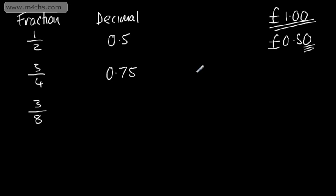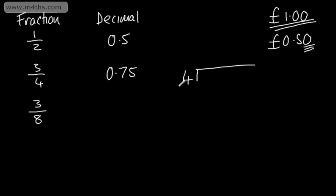Let's say we didn't take that approach — and certainly for some harder examples we wouldn't. What I'm going to do to find the decimal equivalent of a fraction is to use short division. Using what you might have known as the bus stop method, we have the denominator, which is the bottom number, 4, on the outside, and the numerator, or the top number, 3, on the inside.